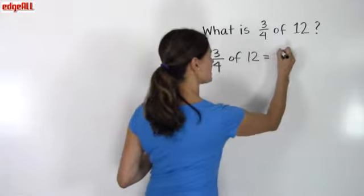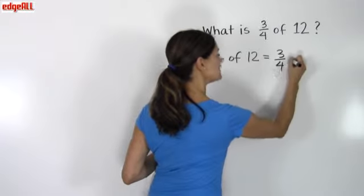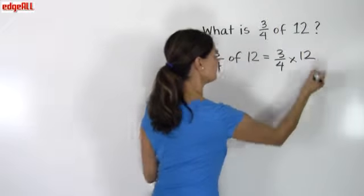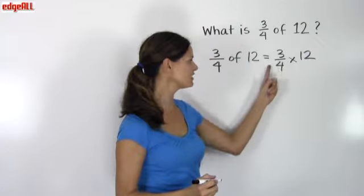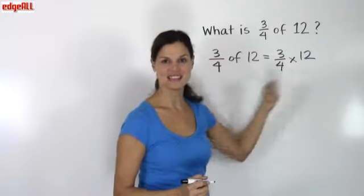So my problem becomes 3 fourths times 12. This of is replaced with a multiplication sign. 3 fourths times 12 is my problem.